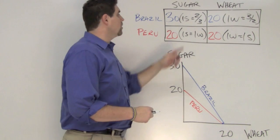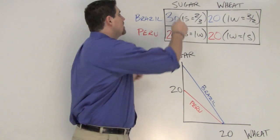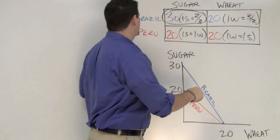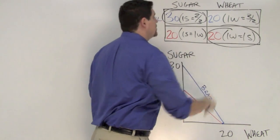Now all you've got to figure out is which country has a comparative advantage or a lower opportunity cost. Well, two-thirds is less than one, and so Brazil has a comparative advantage in the production of sugar. And one is less than three halves, so Peru has a comparative advantage in the production of wheat.